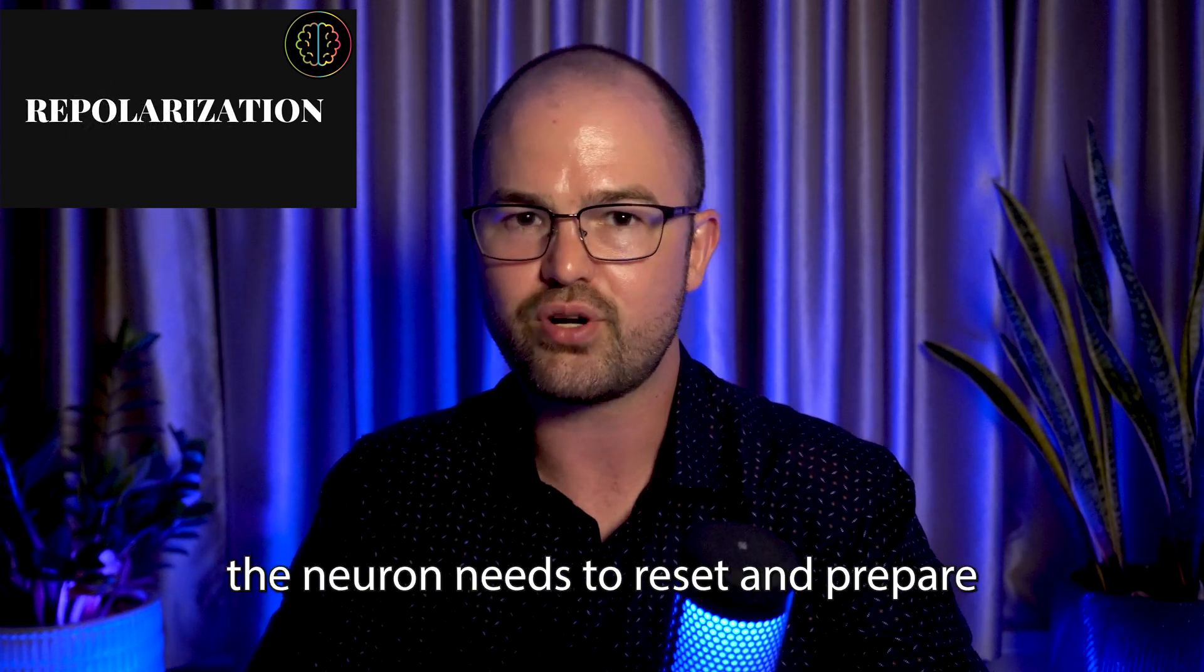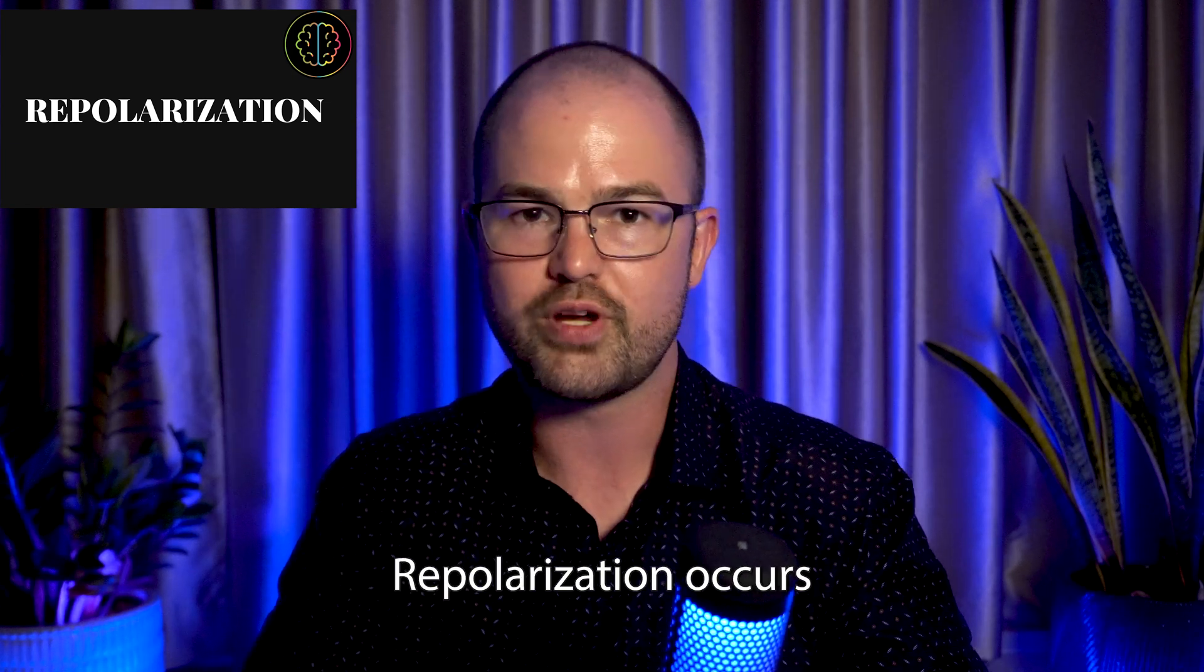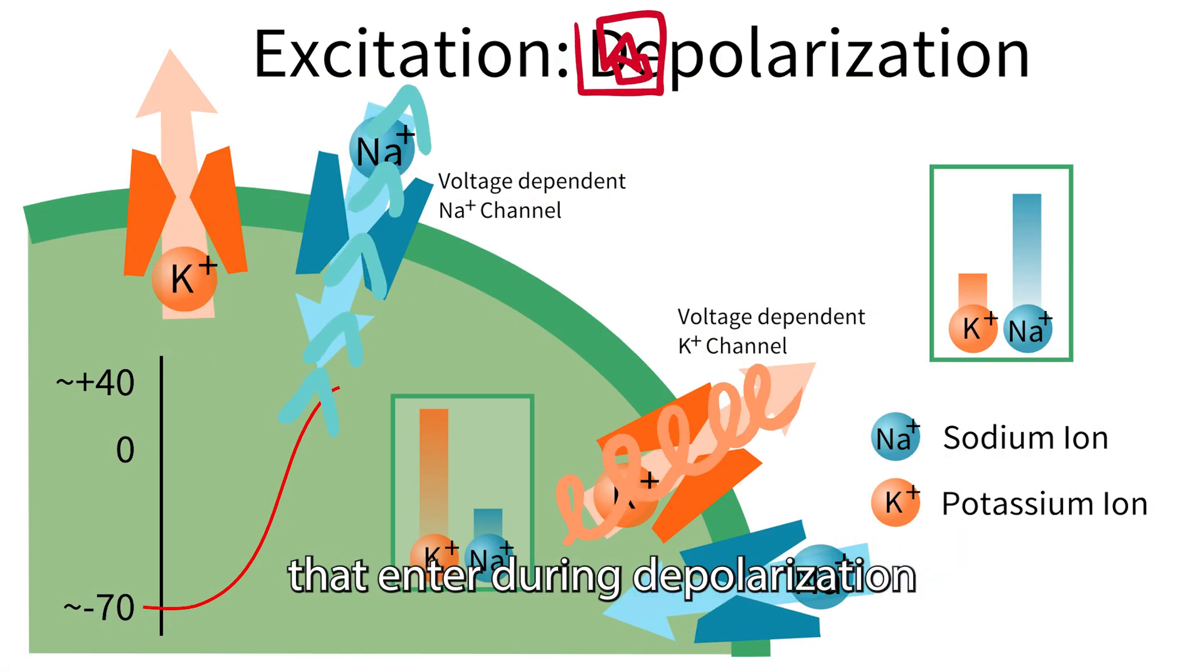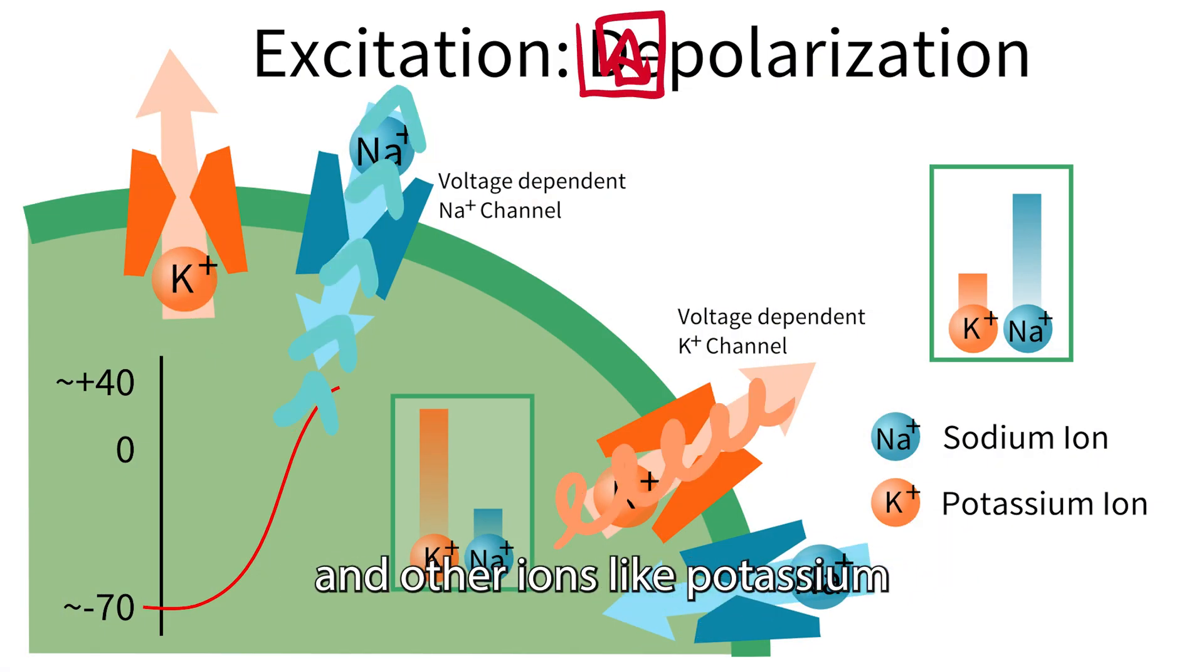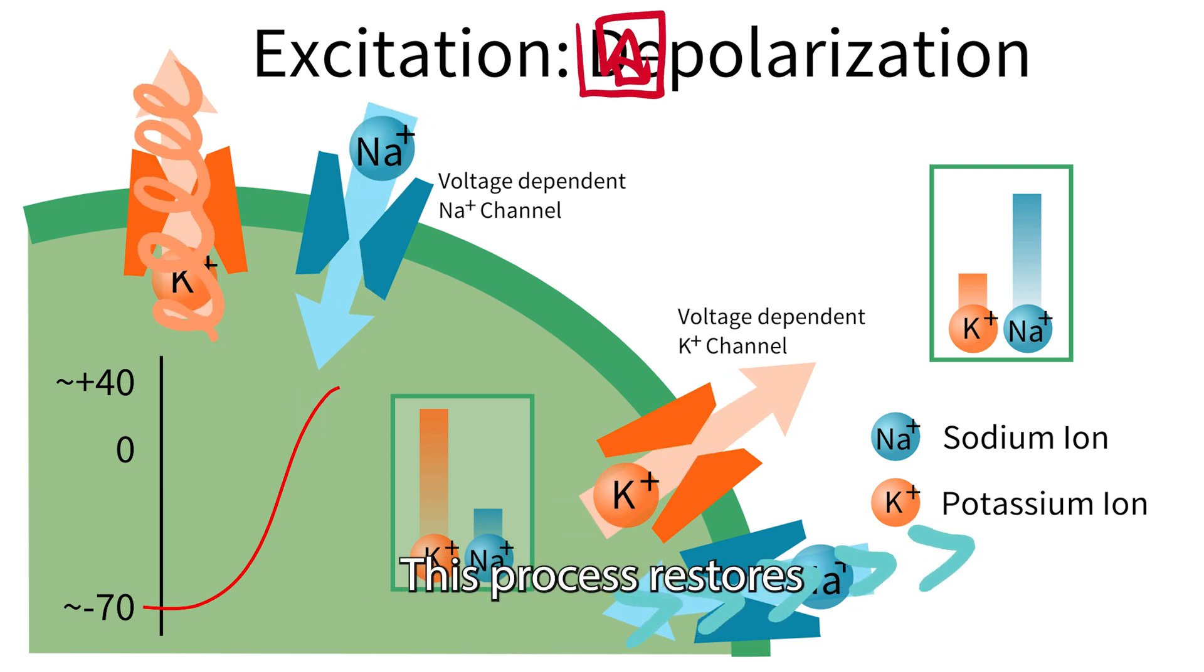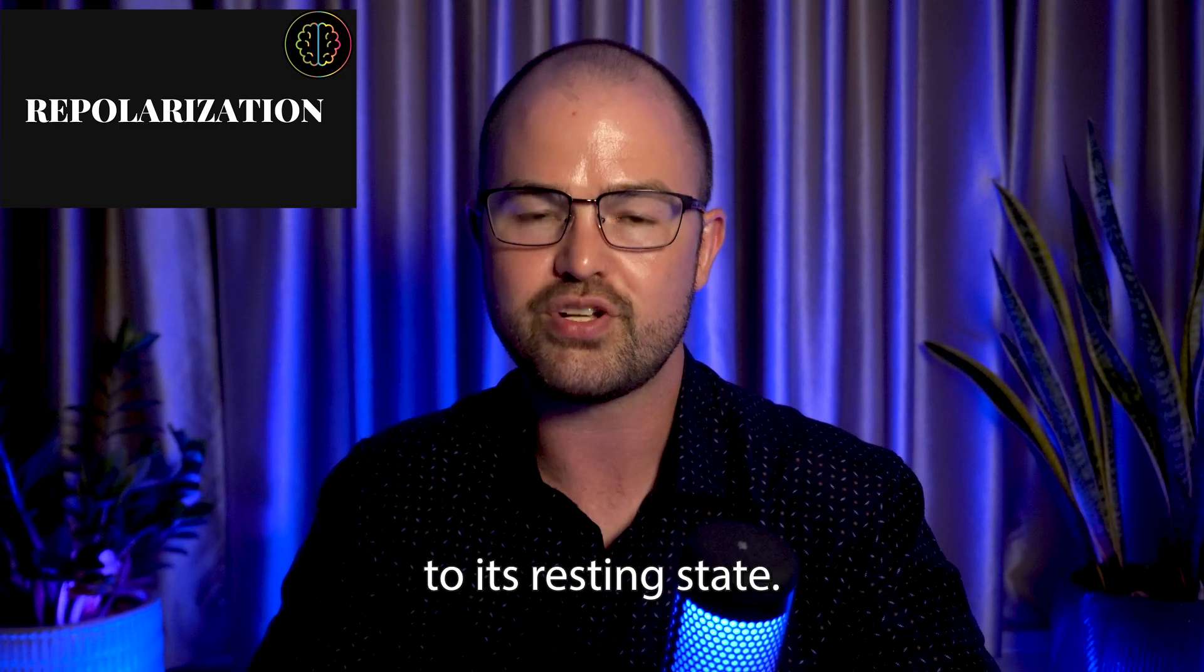After an action potential, the neuron needs to reset and prepare for another potential signal. Repolarization occurs when the positively charged ions that entered during depolarization are pushed out of the neuron and other ions, like potassium ions, move back into the neuron. This process restores the electrical charge across the cell membrane to its resting state.